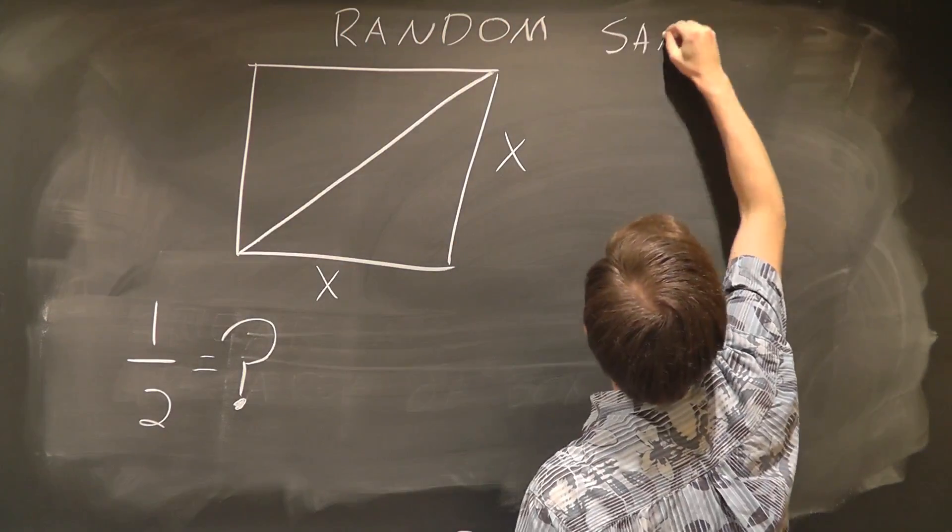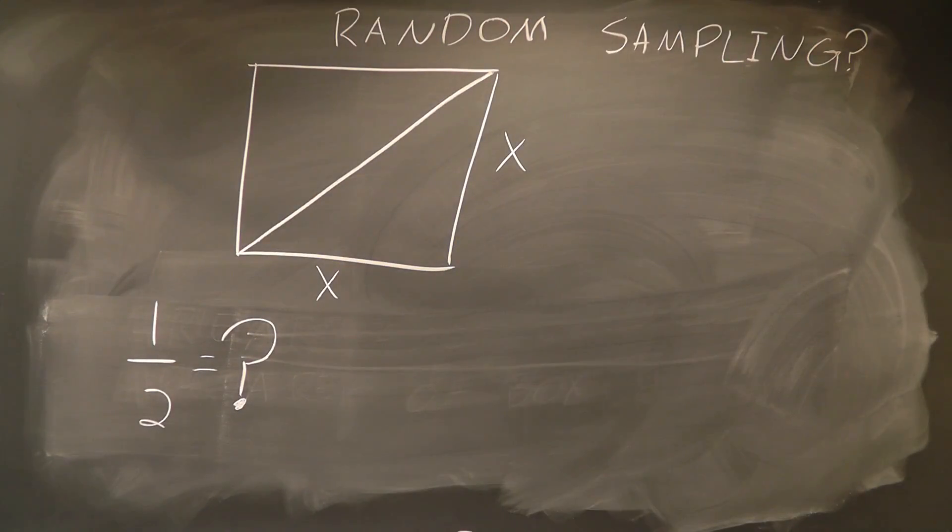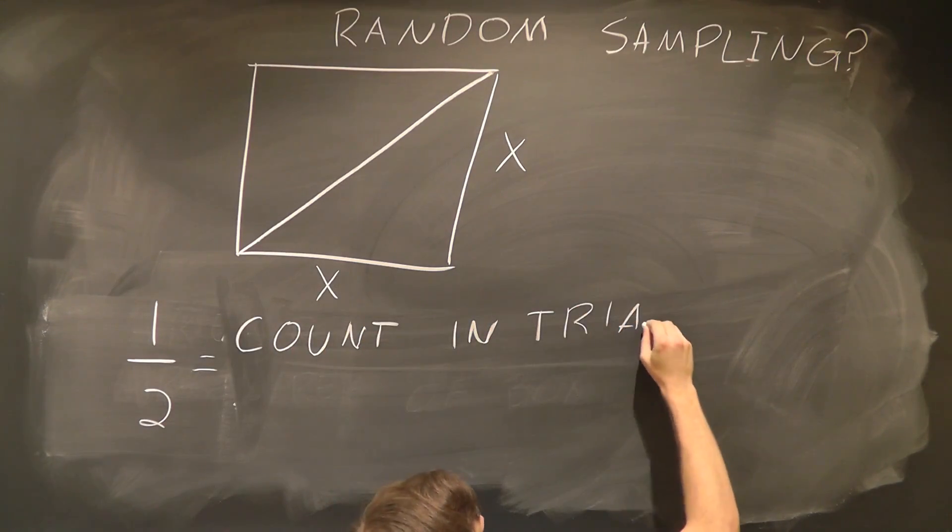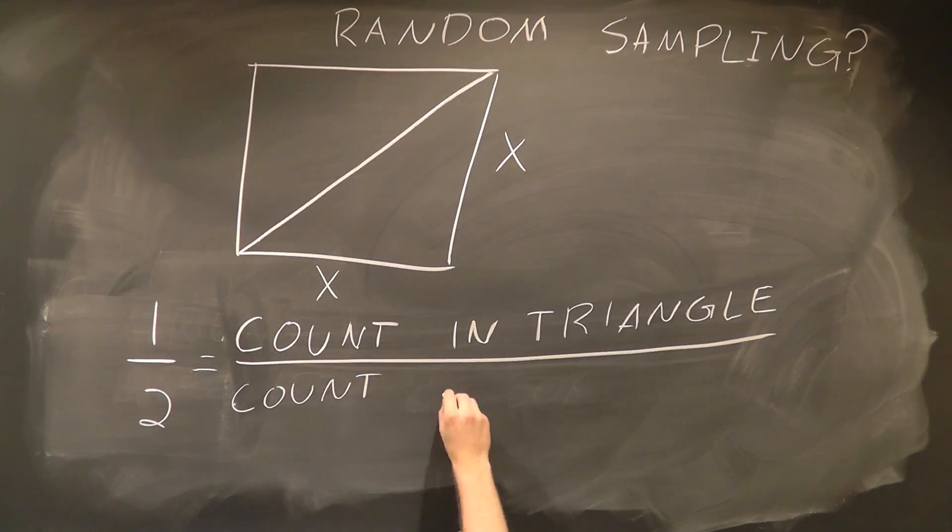Monte Carlo's solution to this problem is random sampling. The idea is that if we take a whole bunch of points in the box and we divide the number of points that fall within the triangle by the total number of points used in the box, we should find that ratio of the areas necessary to compute the integral.